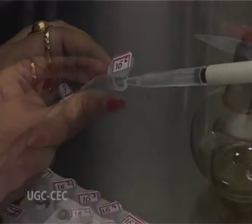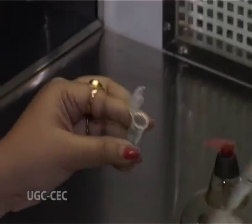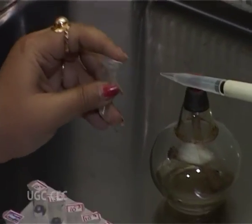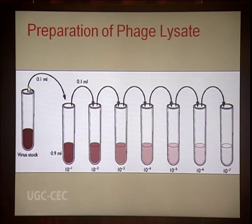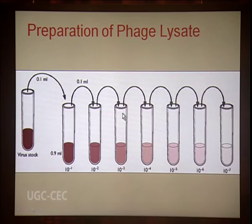To perform the dilution, take 10 tubes each containing 900 µl of tryptone broth. Pipette 100 µl from the phage sample into the first tube, mix properly — dilution becomes 10⁻¹. Then take 100 µl from this 10⁻¹ dilution and add to the second tube — dilution becomes 10⁻². Again take 100 µl from 10⁻² and add to the third tube — dilution becomes 10⁻³. Continue diluting until the dilution reaches 10⁻¹⁰.